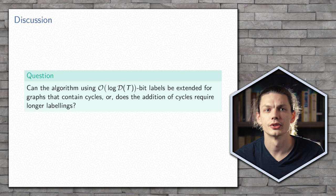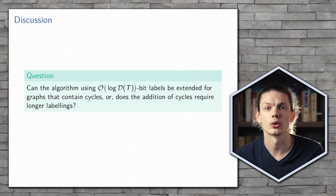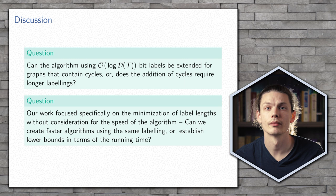Now that we've talked about some of our results, we can ask some interesting questions. Can our algorithm that uses the distinguishing labelling be extended to provide an algorithm that can be used in all graphs? Or is it that the addition of cycles inherently makes the problem more complex?